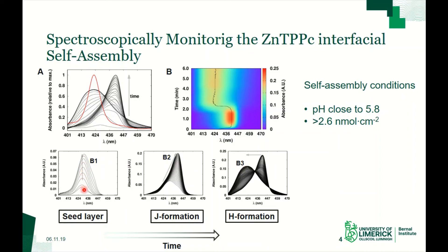In the first step, the porphyrin is adsorbed until it reaches a critical concentration. After that critical concentration, the J-aggregate is formed, and after a certain period of time, the H-aggregate is formed. We determined that the base condition of pH is 5.8, and this process only happens when the interfacial concentration of the porphyrin is greater than 2.6 nanomoles per square centimeter.